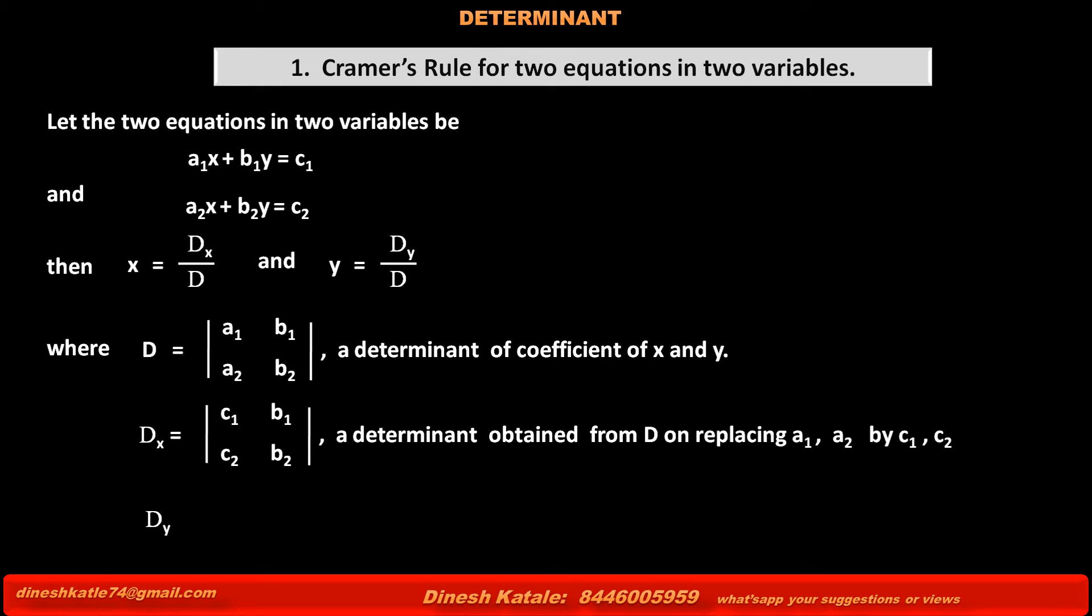Similarly, Dy equals the determinant with a1, c1 in the first row and a2, c2 in the second row - a determinant obtained from the same above determinant D on replacing its second column b1, b2 by c1, c2, constant terms of the above two equations.